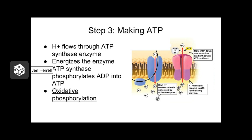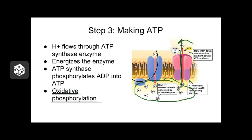Up to this point, we've depended on substrate-level phosphorylation to make a few ATPs — only four total. This new method is known as oxidative phosphorylation. It's much more complex but much more efficient. This machine uses an electron transport chain, a hydrogen gradient, and a big enzyme complex with moving parts, and it doesn't just make one ATP at a time — it makes a bunch of ATPs at a time. So it's much more complex, but also faster.